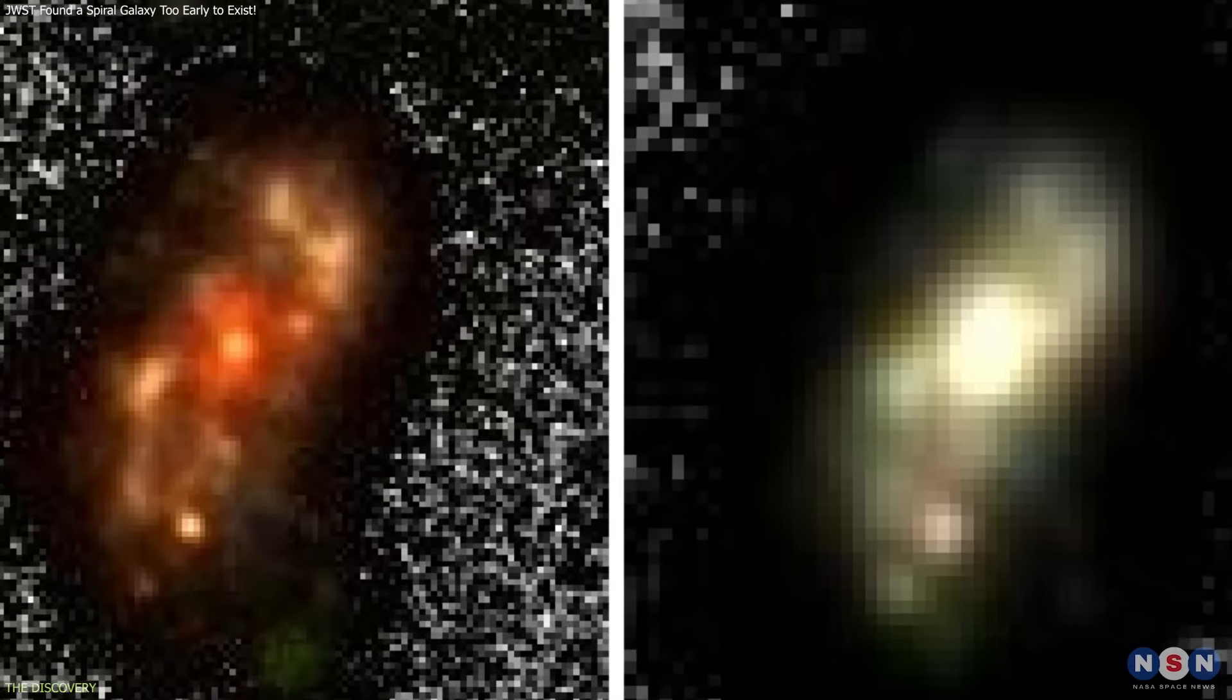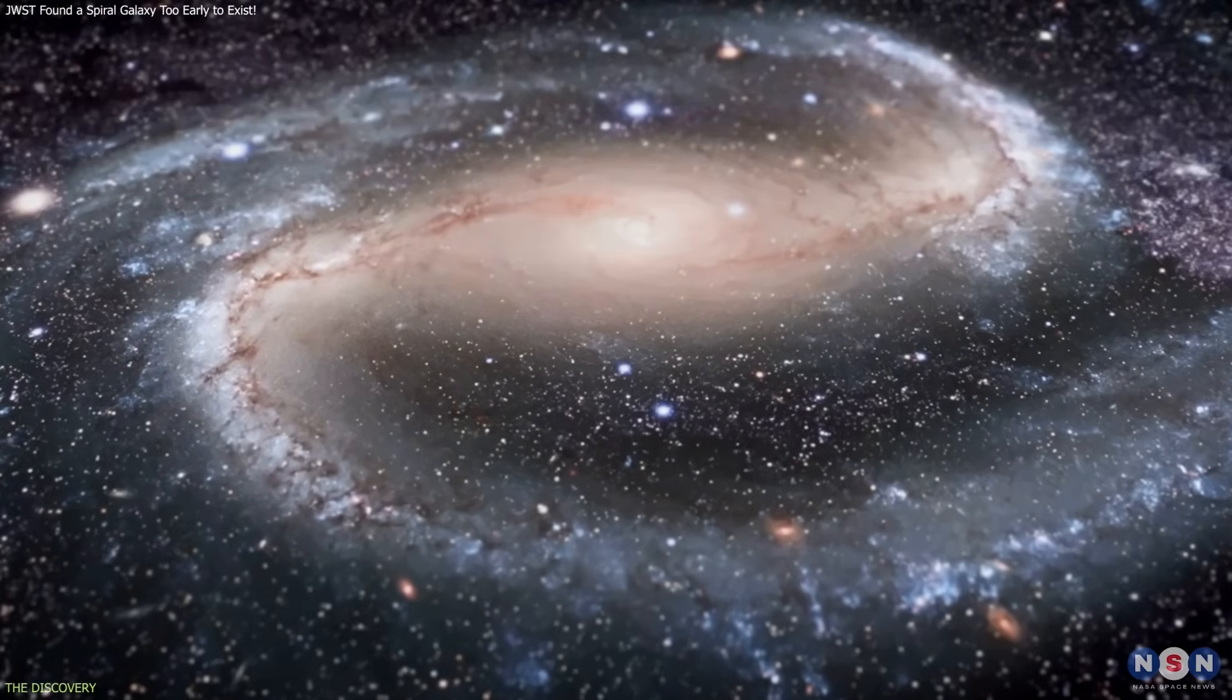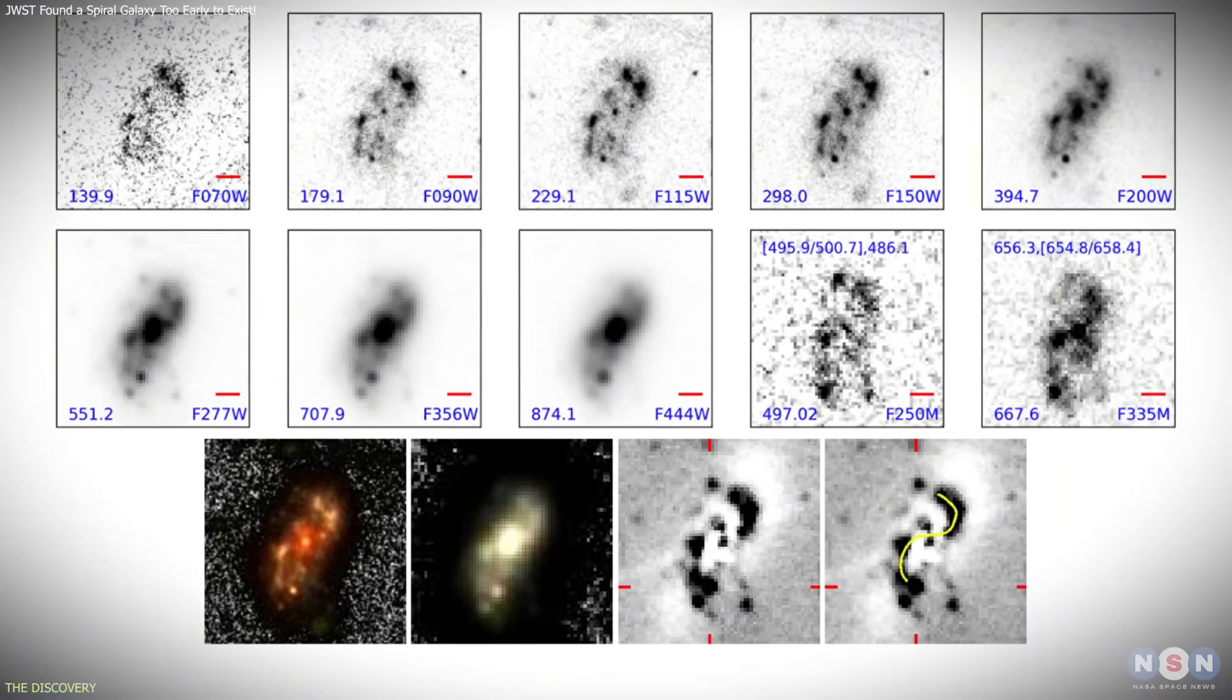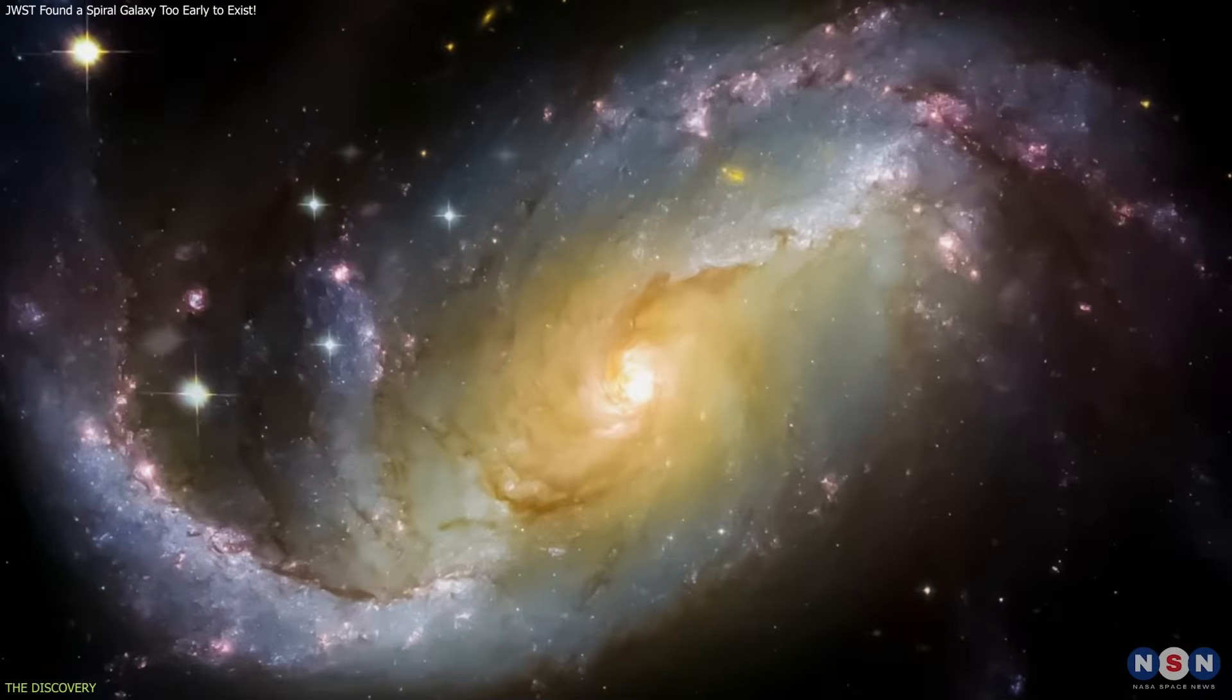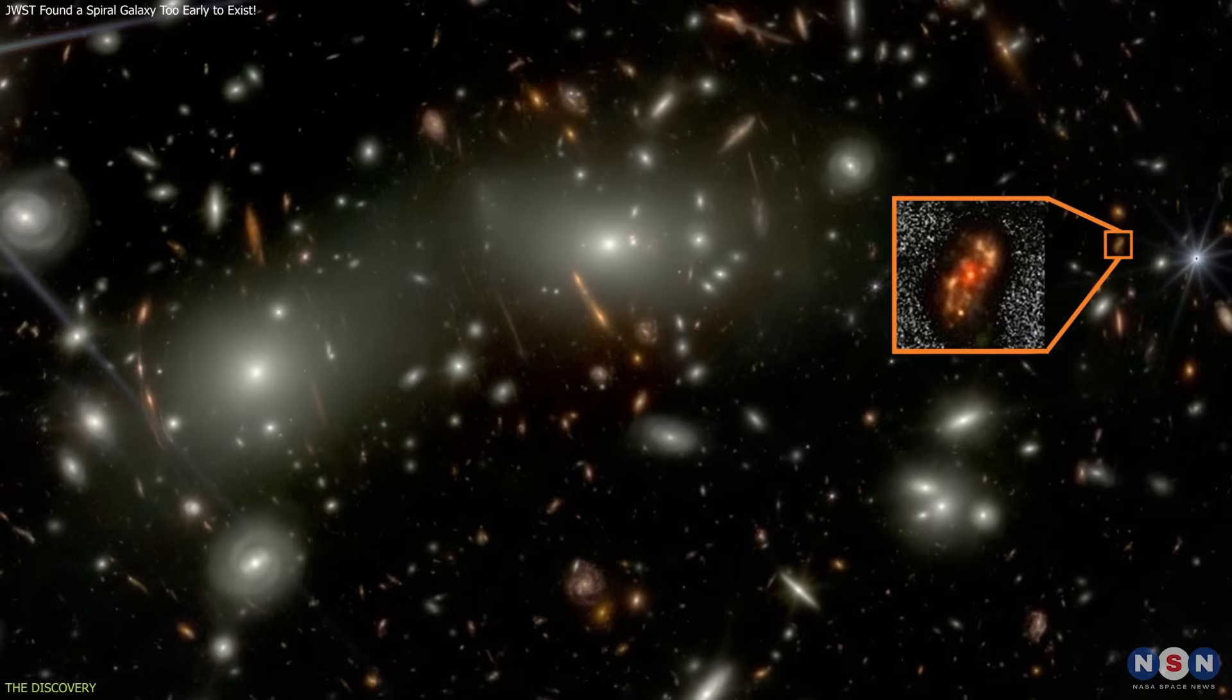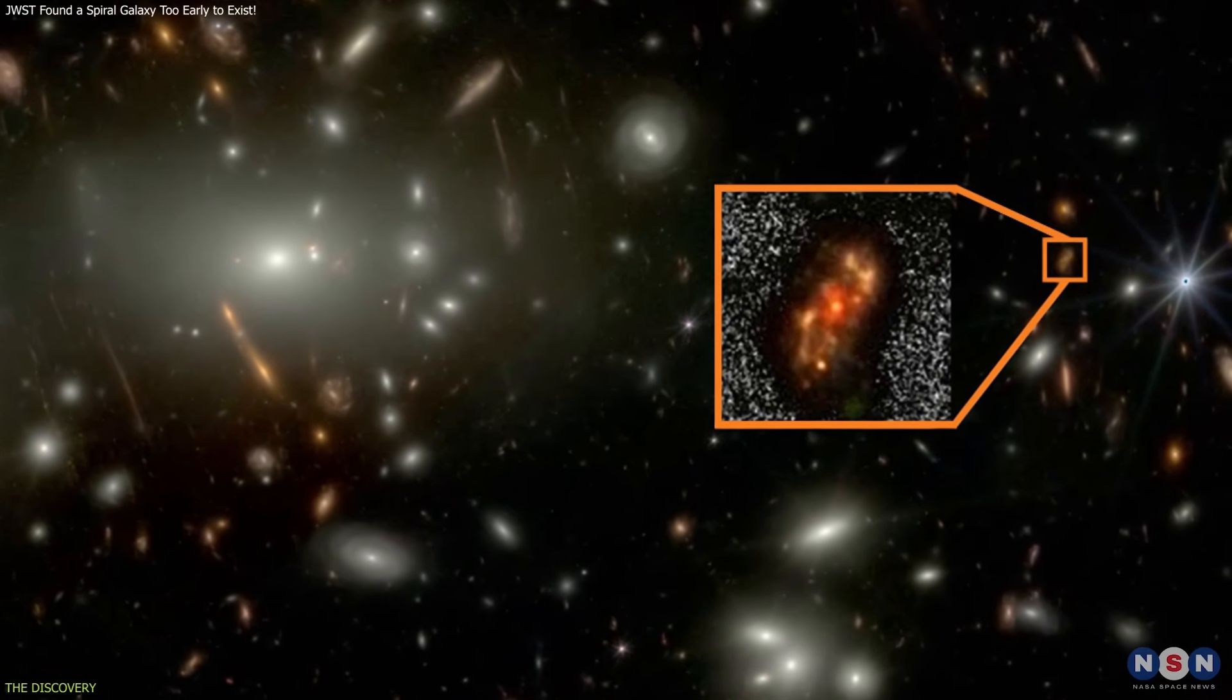The clearest surprise is the presence of two well-defined spiral arms. To verify this structure, scientists used galaxy modeling tools to remove the smooth light from the disk and examine the residual patterns. The spiral arms remain distinct, confirming that the structure is not an artifact of the modeling process. This makes Alec Nanda one of the earliest confirmed Grand Design spiral galaxies known.